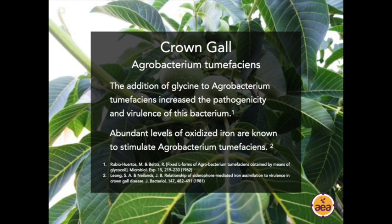When we look at crown gall on walnuts — Agrobacterium tumefaciens — interestingly, when we look at iron, we've been focusing on manganese so far, but this quote is relevant: 'Abundant levels of oxidized iron are known to stimulate Agrobacterium.' So we can have either ferric or ferrous iron in soil systems and various siderophores absorbed by plants — Fe2+, Fe3+, et cetera. One form enhances the presence of the disease and the infection rate, and the other form suppresses it. Which do you think suppresses it? It's the reduced form. Again, it comes back to reduction and oxidation.